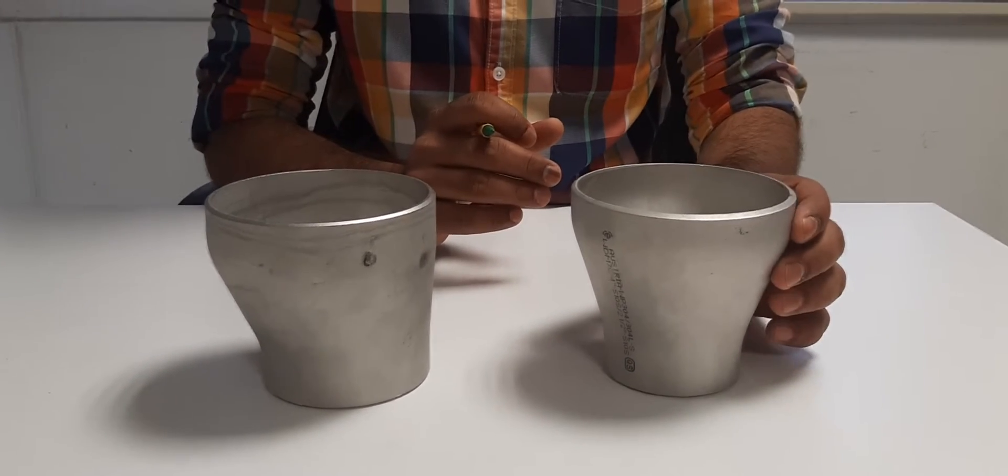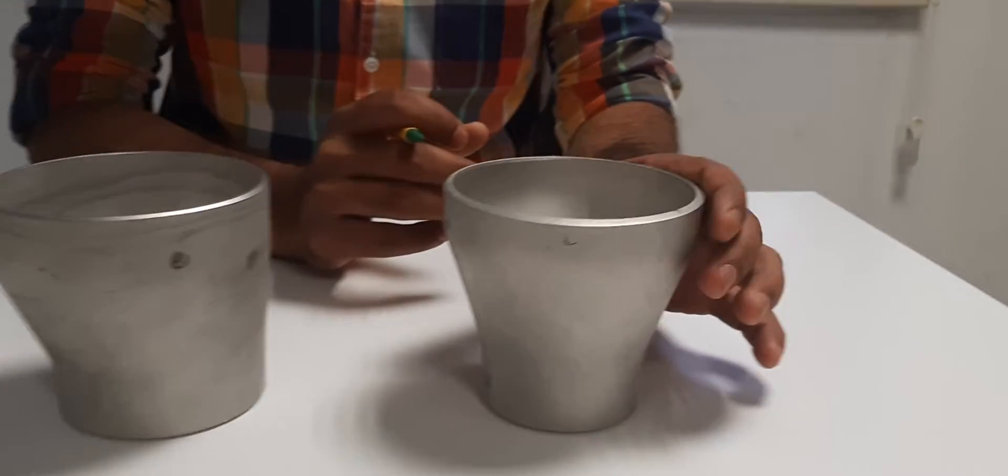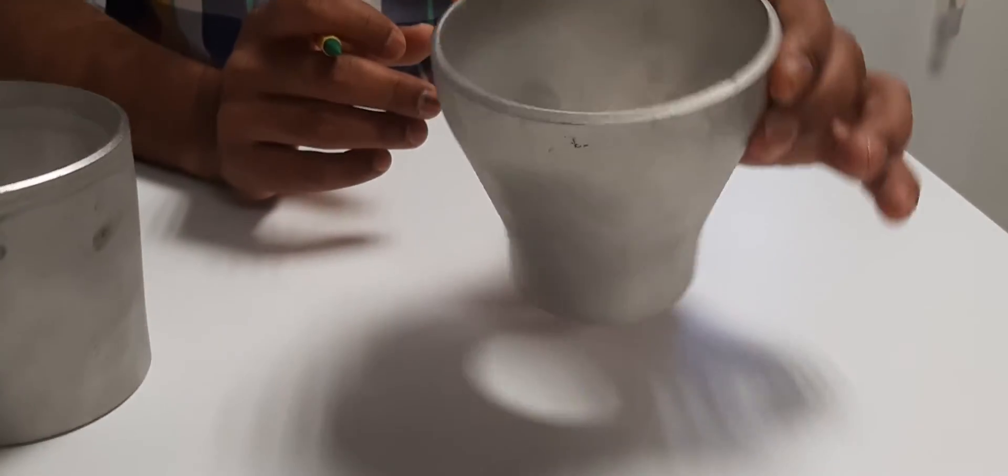First we will go to concentric reducer. See here, the concentric reducer, the shape looks like a cone.